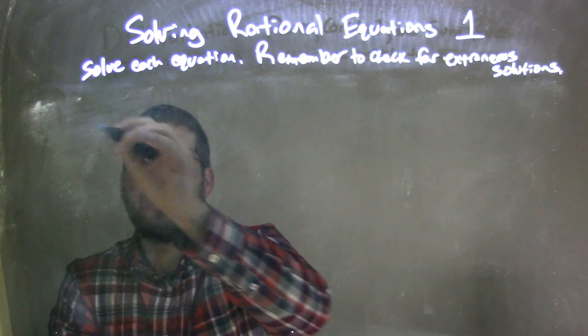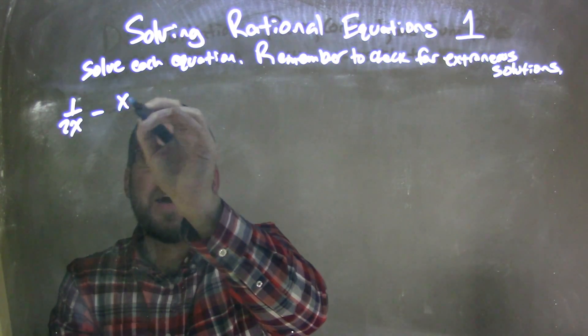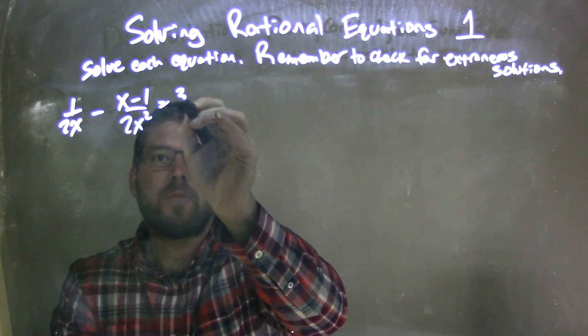So if I was given this equation: 1 over 2x minus x minus 1 over 2x squared is equal to 3 over x.